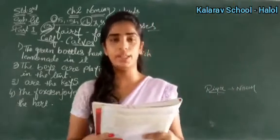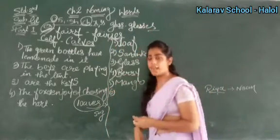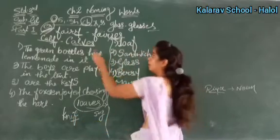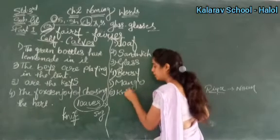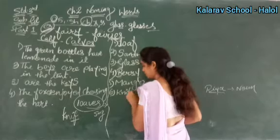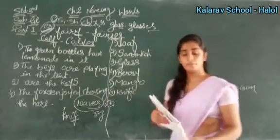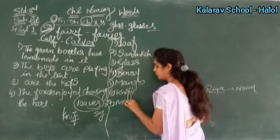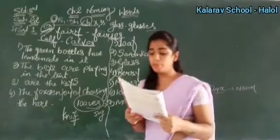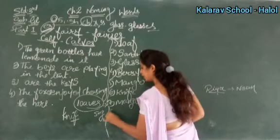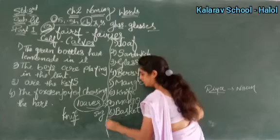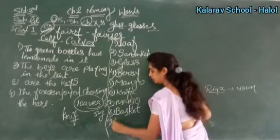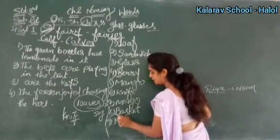We use knives to cut the mangoes. Knives — knife ka plural: knife mein F hai, toh F ki jagah V aur ES: knives. We put our baskets and mats. Baskets — singular: basket. Mats — singular: mat.